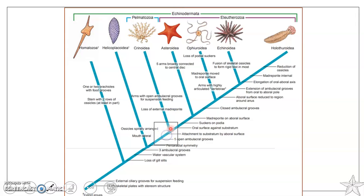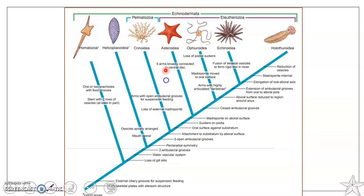The ancestors of Crinoidea later developed the oral surface against the substratum, developed suckers on the podia, and developed the madreporite on the oral surface. Those ancestors with madreporite on the oral surface, oral surface close to the substratum, open ambulacral grooves, and pentaradial symmetry evolved into the Asteroidea, which includes starfishes and sea stars, having five arms broadly connected to the central disk.